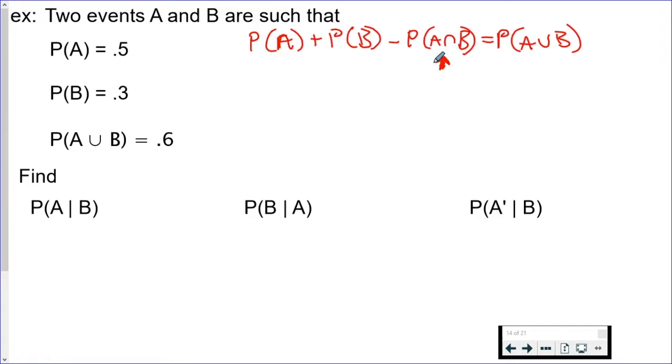This is the algebra part. If you are having trouble with this part, I would try. So probability of A, that is 0.5. Probability of B, that is 0.3. Minus, we don't know this, equals the union is 0.6.